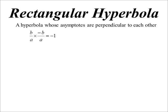Well, if that's true, we know the slopes of the asymptotes are plus or minus B on A, and they must multiply together to give negative 1. So that basically tells us A is equal to B in a rectangular hyperbola.